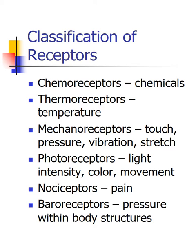Mechanoreceptors are responsible for detecting changes in touch, pressure, vibration, and stretch, and are predominantly found within the skin, but also within the ear for equilibrium. Photoreceptors are found within our eye and respond to differences in light intensity, color, and movement so that we can track objects. Nociceptors respond to pain and are found everywhere within the body, responding to chemical, temperature, and mechanical stresses. Baroreceptors respond to differences in pressure within body structures and are especially important within the cardiovascular system — for example, low blood pressure would be a signal that baroreceptors would be triggered.